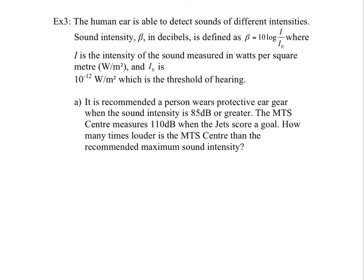In this last example, we look at a logarithmic scale for sound intensity — the decibel scale. The formula is: decibels equals 10 times log of I over I0, where I is the intensity of the sound measured in watts per square meter, and I0 is the base threshold of hearing. It's recommended that a person wears protective gear when sound is 85 decibels or greater. The MTS center measures 110 decibels when the Jets score a goal. How many times louder is the MTS center compared to the recommended maximum?